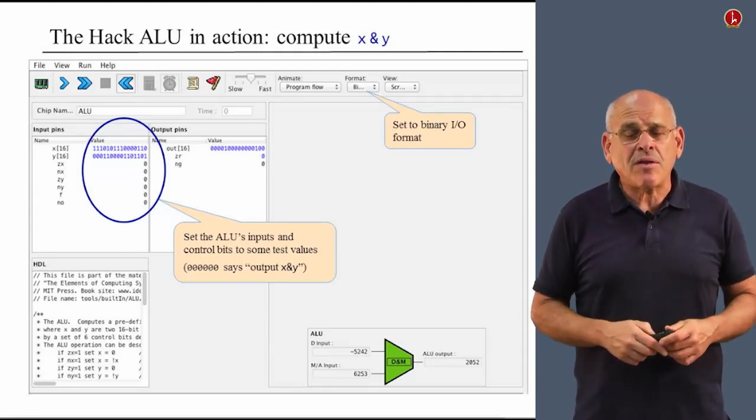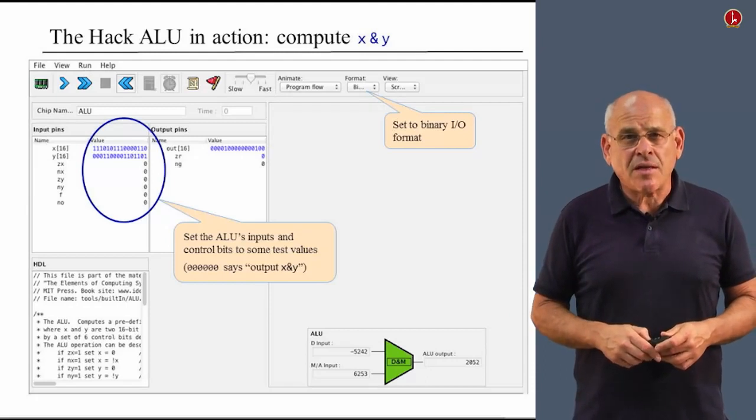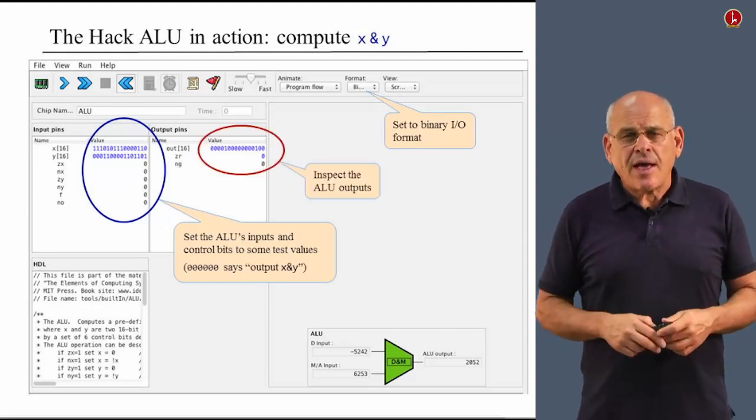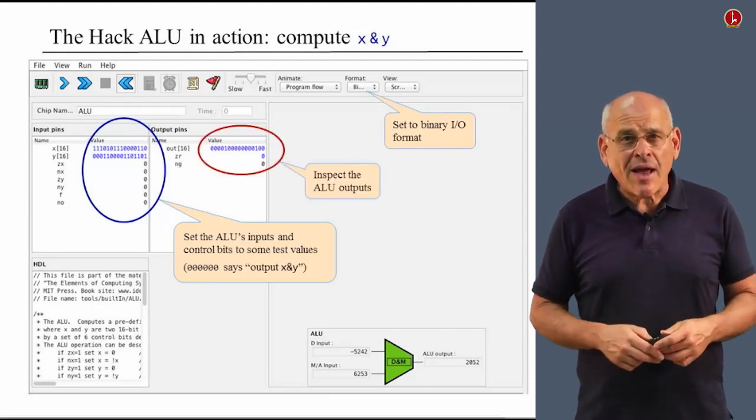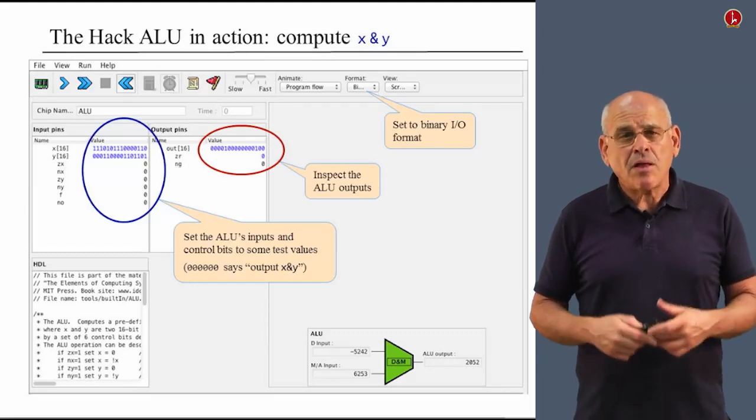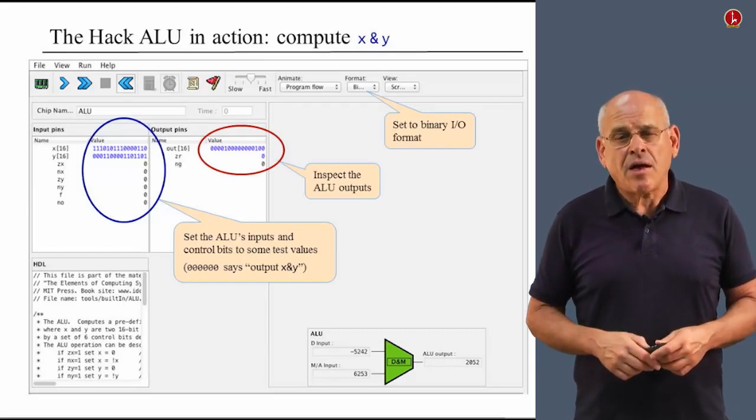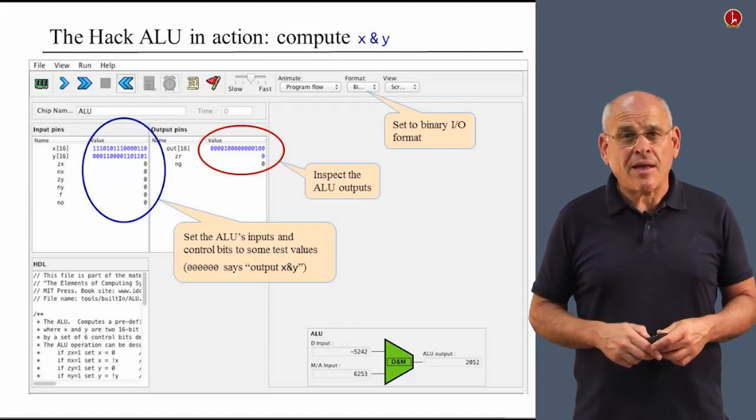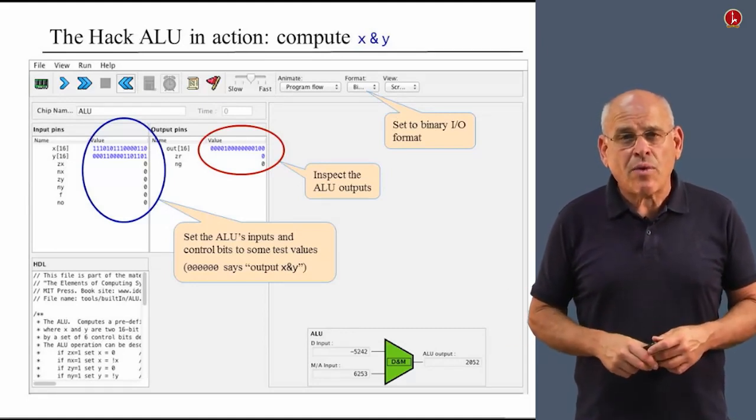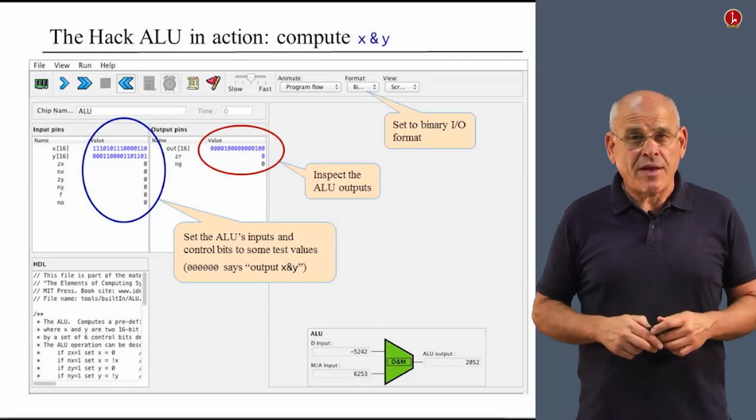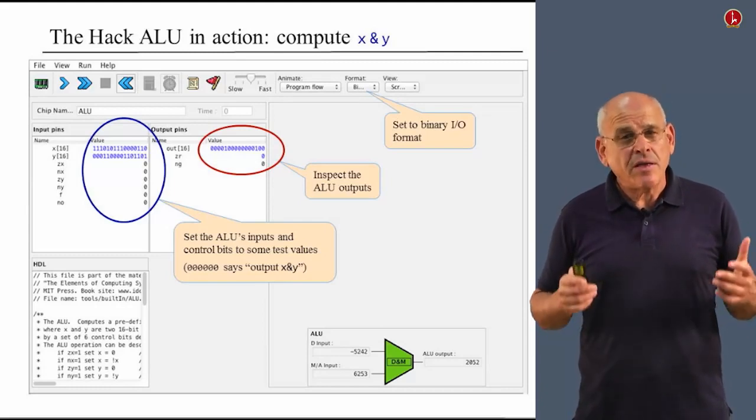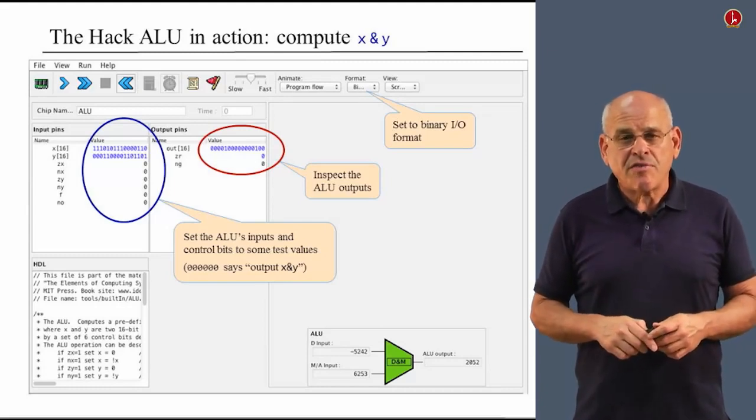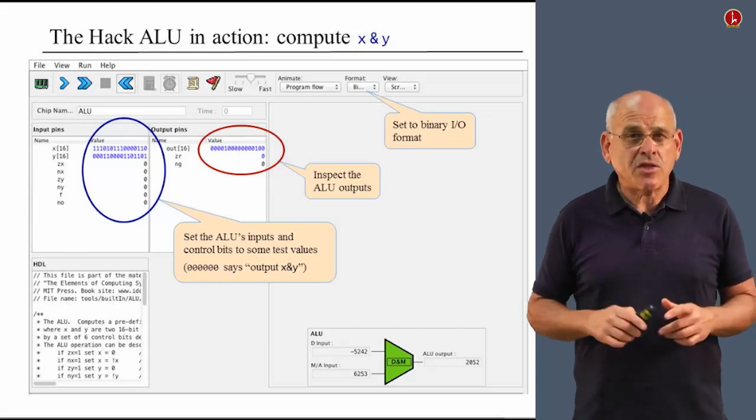Which happens to be the directive to compute x and y. Once again, if you look at the truth table, you will see this row listed out. And indeed, after we click the calculator icon, which I skipped in this example, we see that the ALU actually computed a bitwise and operation. And the result is the bitwise and of the two given inputs. So far, it seems like the ALU is functioning quite well, at least in these two examples.